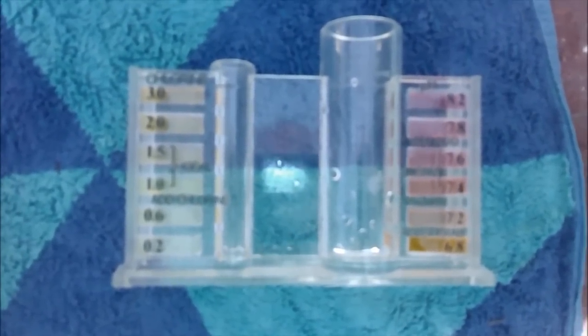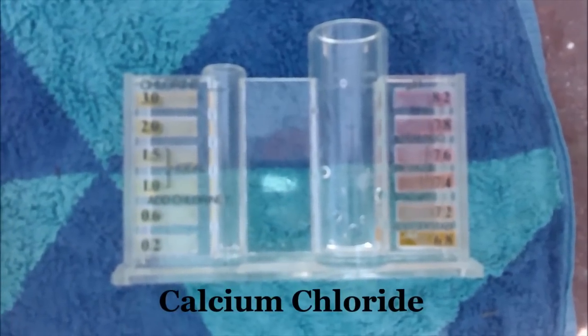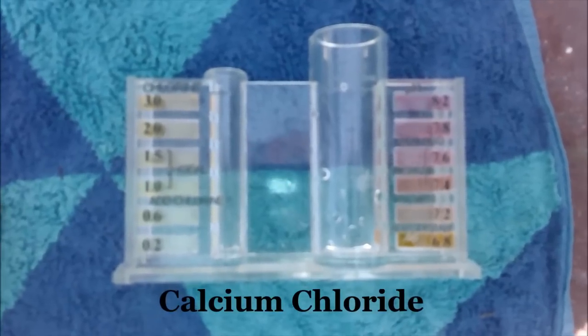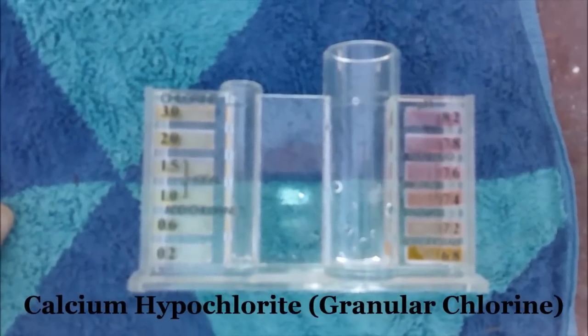Also, if you have high hard fill water, you don't want to use calcium chloride because that will increase the calcium level as well. Also, you want to reduce or preferably eliminate the use of calcium hypochlorite, which is the chlorine.